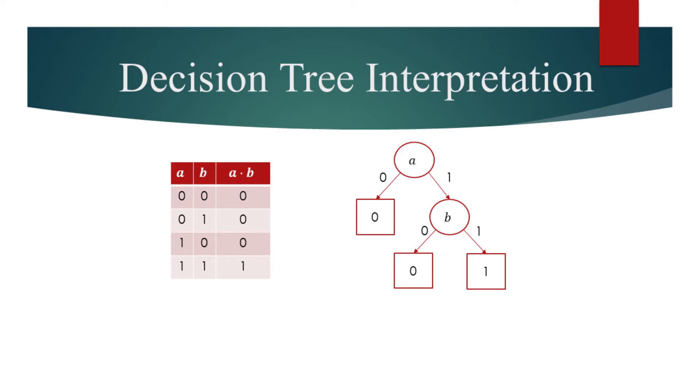If a were equal to 1, we would visit the child node on the right. This is an internal node, commonly denoted as a circle. It asks for the value of b and then sends us to the corresponding leaf node.